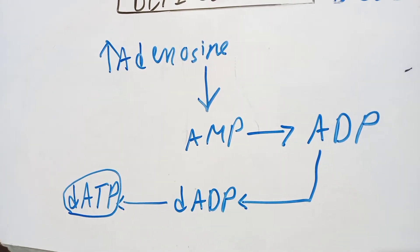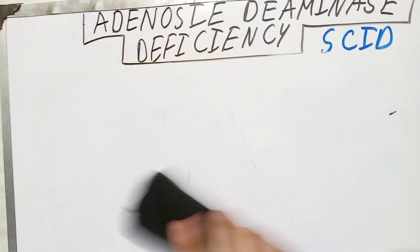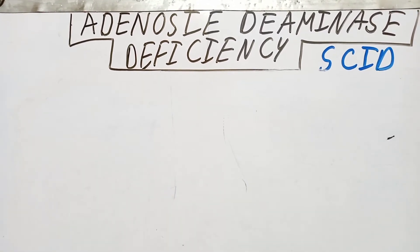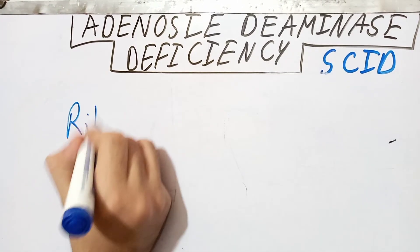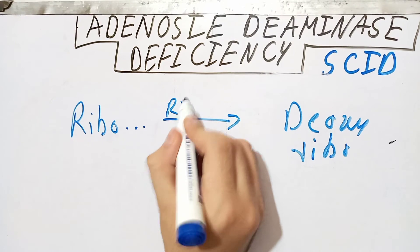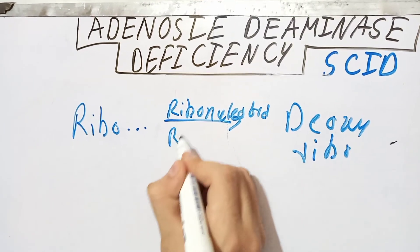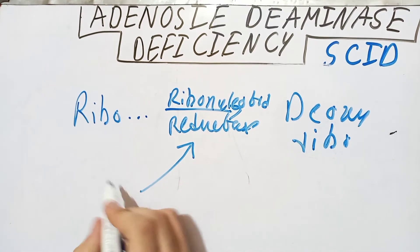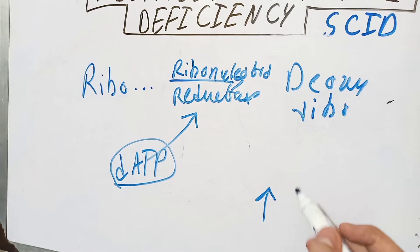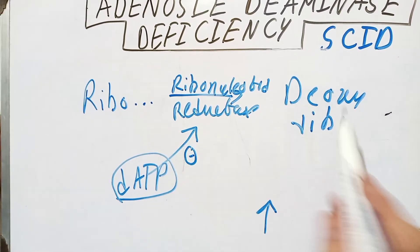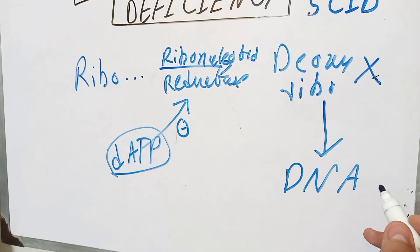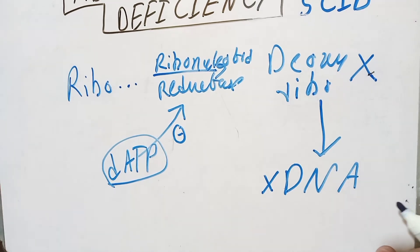The deoxyATP compound inhibits an enzyme that catalyzes the conversion of ribonucleotides into deoxyribonucleotides — this enzyme is called ribonucleotide reductase. When ribonucleotide reductase is inhibited by deoxyATP being formed in large quantities, deoxyribonucleotides are not formed. When deoxyribonucleotides are not formed, there are no nucleotides available for DNA synthesis, so cells cannot divide rapidly and begin dying.